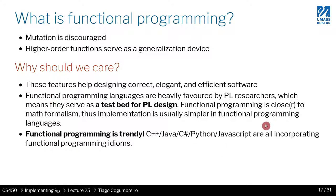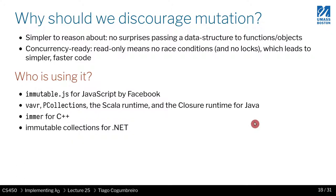Functional programming is heavily favored by programming language researchers, which means almost all features you've used in your favorite programming language actually derived from a functional programming language — you're kind of peering into the future. Functional programming is also closer to mathematical formalism. And functional programming is trendy: well-established languages like C++, Java, C#, Python, and JavaScript are all incorporating functional programming idioms such as streams, lambdas, and so on.